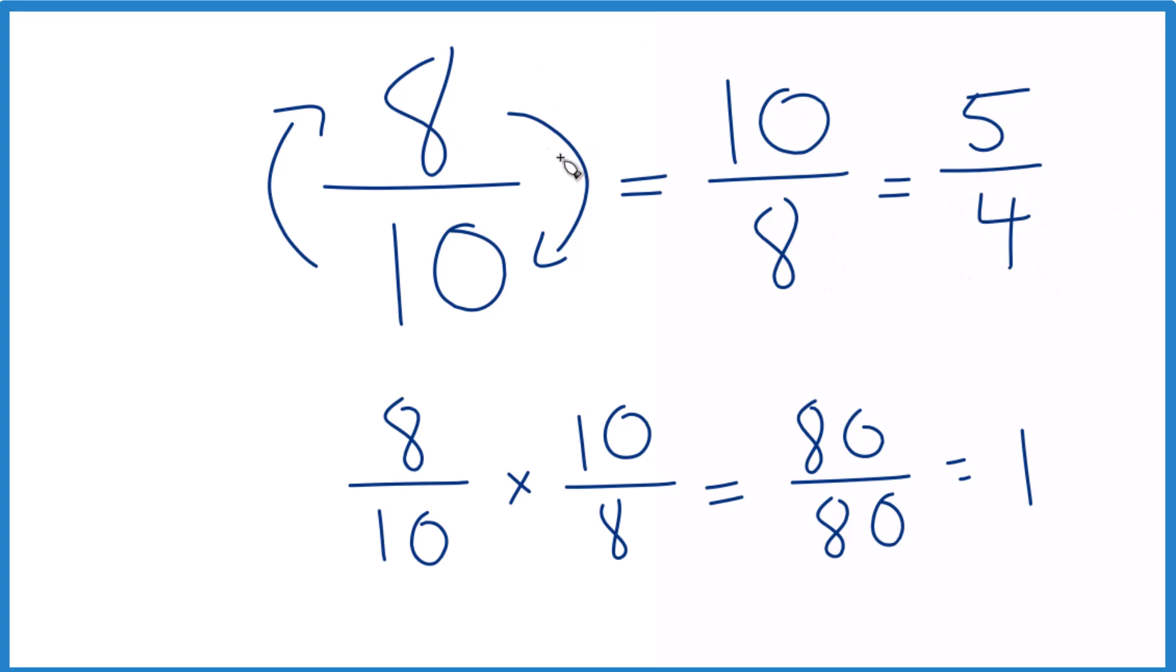So, in answer to our question, when you find the reciprocal for 8 tenths, you end up with 10 eighths, or simplified 5 fourths.